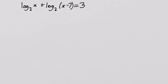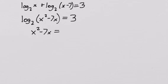We'll go ahead and multiply that together. x squared minus 7x is equal to 2 to the third. And now we can apply the definition of the logarithm. x squared minus 7x is equal to 8.